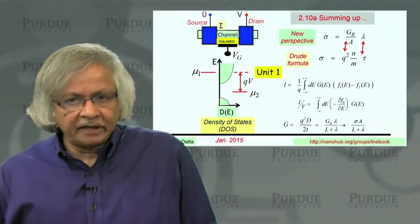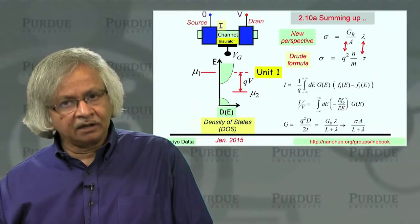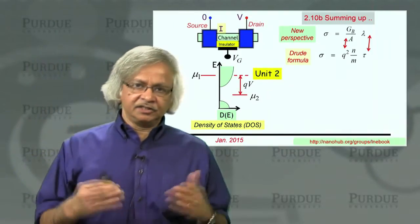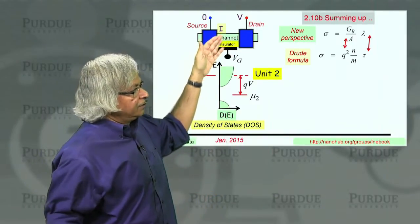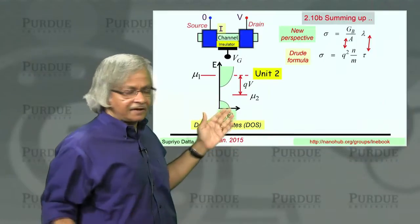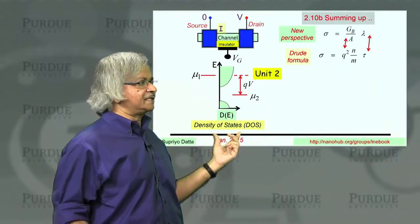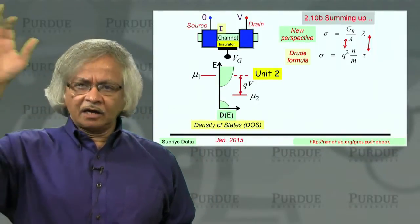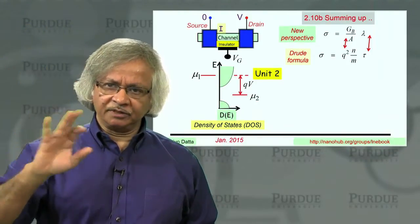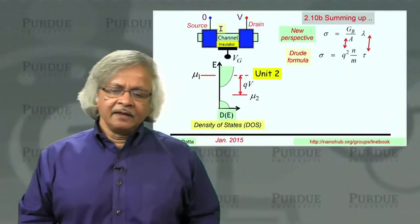One of the objectives we had in this unit was to try to connect the two. In order to do that, we have to introduce a specific model for these energy levels. You see, in Unit 1, we just discussed everything in terms of a general density of states. We said, well, let's say we know the density of states. Then what should be the conductance? What should be the current, et cetera?